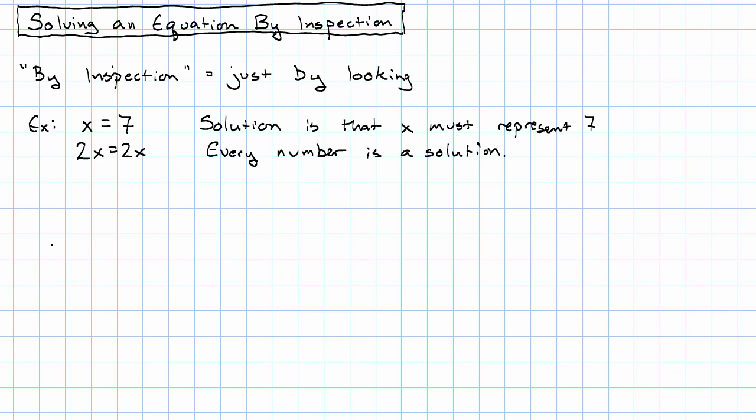Maybe we have an equation that looks like this: 3 equals 5. Is there anything I could possibly make any variable to make that true? No, obviously not. So it's obvious looking at this that there is no solution. These are the very simplest sorts of equations. We can tell just by looking what the solution is.